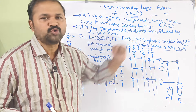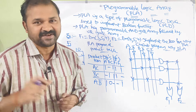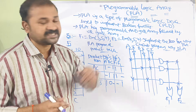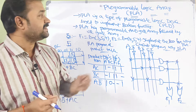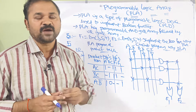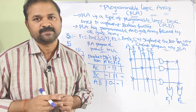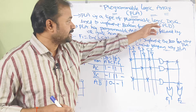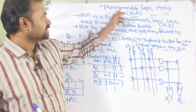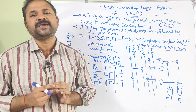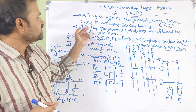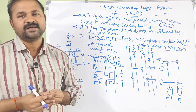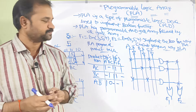There are two types of Programmable Logic Devices. The first one is Programmable Logic Array, that is PLA, and the second one is Programmable Array Logic, that is PAL. In this video we are going to discuss about the first PLD component, that is Programmable Logic Array PLA. So now let's see what PLA is.